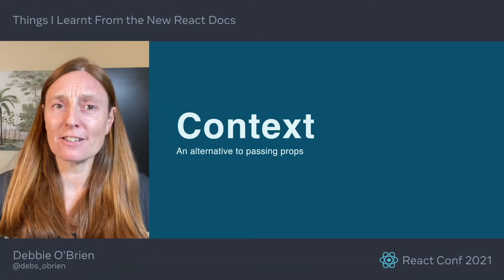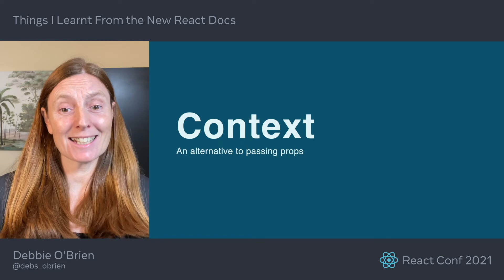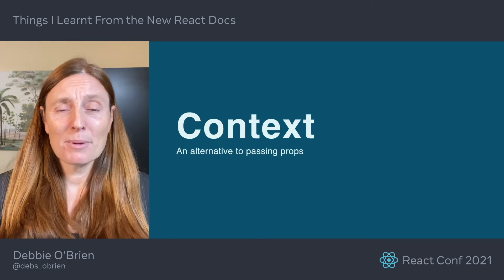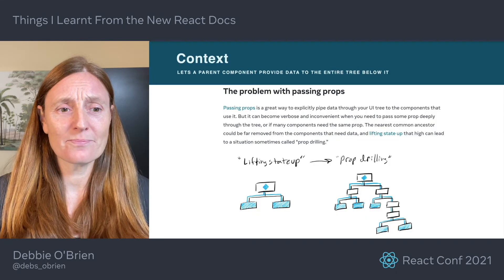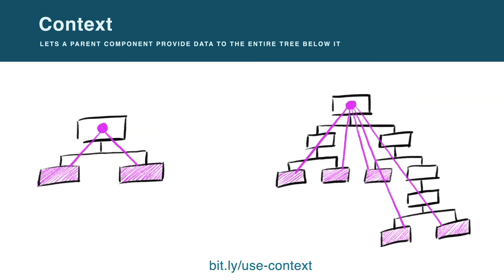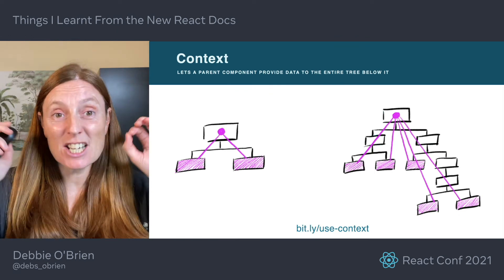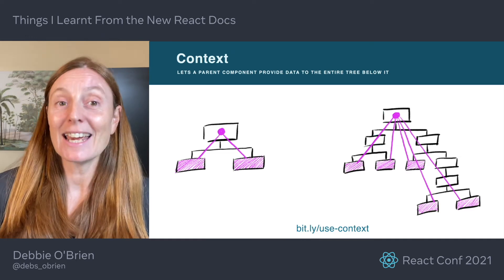So how do you do theming in React? Just create a context, I was told. First of all, what is a context? And second, how on earth do I create one? But context is just an alternative to passing props — it lets a parent component provide data to the entire tree below it. Normally you would pass props down through every component, which can become verbose and inconvenient. But with context, any component wrapped in the context provider can access that data without having to pass props down through multiple components. You can see this from the illustration in the docs — it basically just beams the data down to any component inside the context provider.